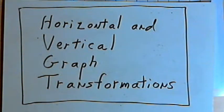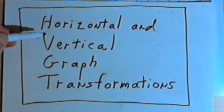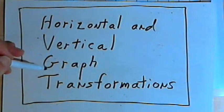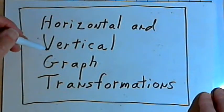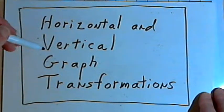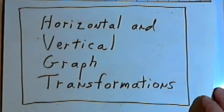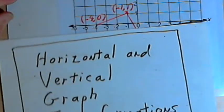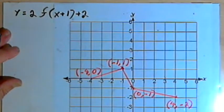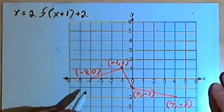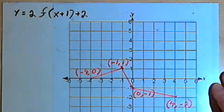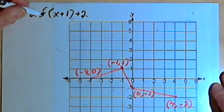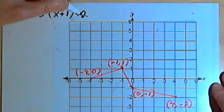This video is provided as supplementary material for courses taught at Howard Community College. In this video I want to do a couple of examples of horizontal and vertical graph transformations. I've already done separate videos on horizontal and vertical graph transformations individually. When you have combinations of these, sometimes it can get a bit confusing. So I want to show you a methodical way of putting it all together. Let's start out with this graph — we'll say this is a graph of function f — and we're told to sketch a graph of y equals 2f of x plus 1 plus 2.